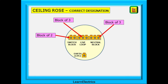When installing a new ceiling rose we must maintain the correct designation for a three-plate ceiling rose. If we don't, then anyone following behind us is likely to find it difficult to understand the wiring. The outside block of two terminals is always the switch block. The middle block of three terminals is always the live loop, and the outside brass block with three terminals is always the neutral block. We should always keep this same order.